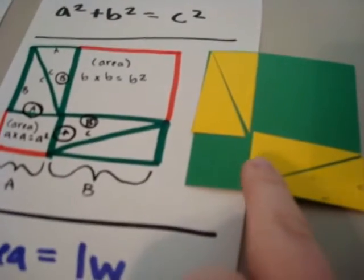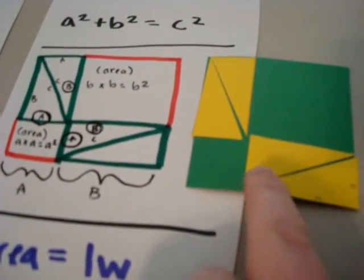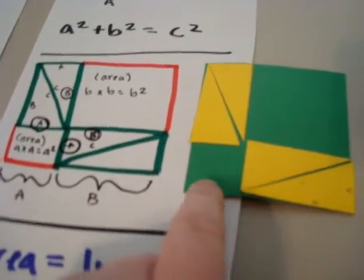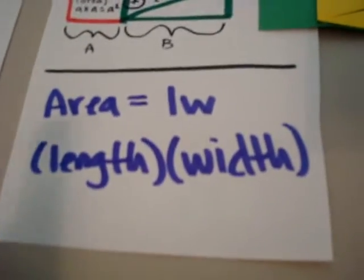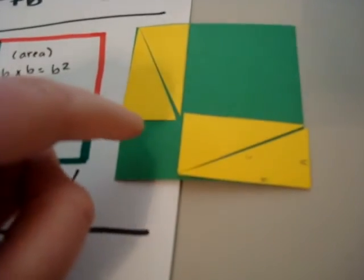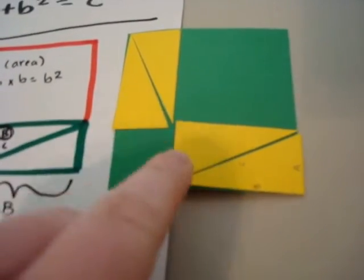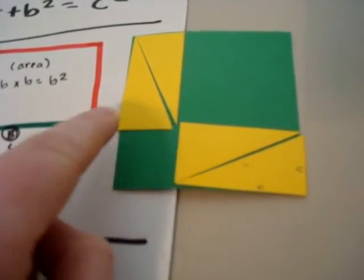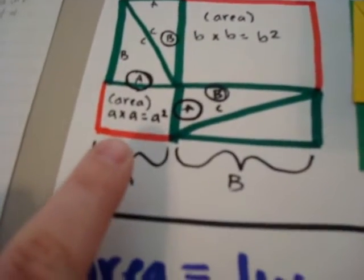And then down here it has A too. To get the area of a square, you do length times width. The length is A, and the width is A also. So you just do A times A, which is A squared.